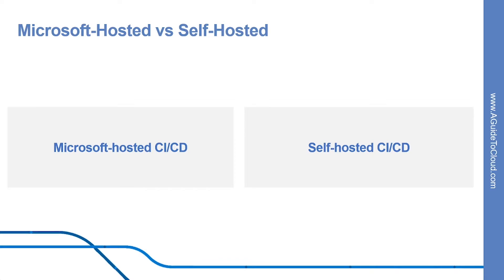When the free tier is no longer sufficient, you can contact Microsoft to get your free tier limits increased. For self-hosted CICD, if you want Azure Pipelines to orchestrate your builds and releases but use your own machines to run them, use self-hosted parallel jobs. You start by deploying agents on your machines, and you can register any number of these self-hosted agents in your organization. Microsoft charges based on the number of jobs you want to run at a time, not the number of agents registered.